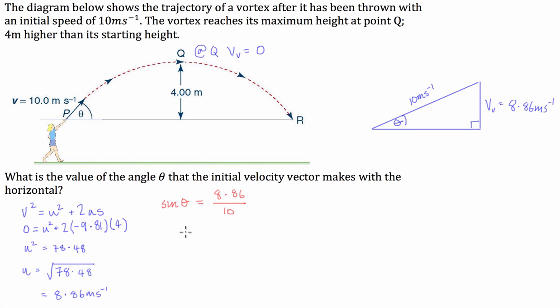We can rearrange to have theta is equal to the inverse of sine, 8.86 divided by 10. And that is equal to 62.3 degrees.